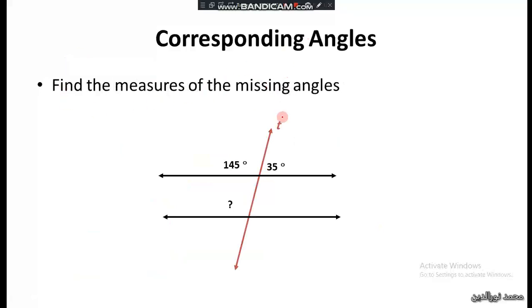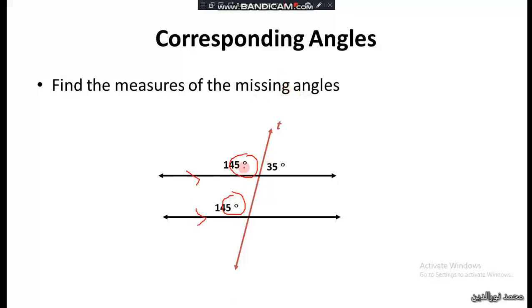Now find the measure of the missing angle. We can see that this angle and this angle are corresponding. Since the two lines are parallel, corresponding angles are equal. Therefore the measure of this angle is 145 degrees.